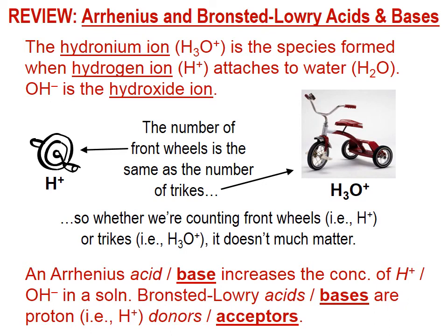Let's review. The hydronium ion, H3O+, is the species formed when hydrogen ion, H+, attaches to water. OH- is the hydroxide ion. A trike analogy: a trike has three wheels, so the trike represents the hydronium ion, where each wheel is an H and the rest of the trike is the oxygen atom. If you count up 58 trikes in a room, and instead you just counted front wheels, you'd still get 58. So whether we're counting front wheels — hydrogen ions — or trikes — hydronium ions — it doesn't much matter.